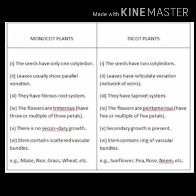Jabke inke andar three, ya three ka multiple petals — yeh flower mein present hota hai monocot plants mein. Jabke five, ya usse ka multiple number mein petals — petal jo colored part hota hai na flower ka — woh present hota hai dicot plants mein.